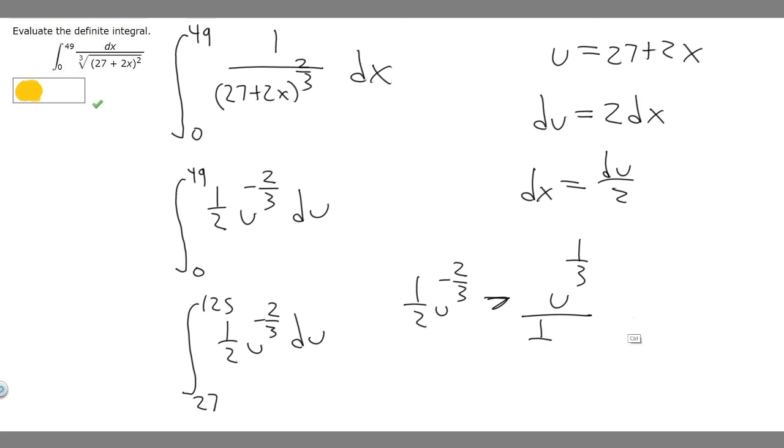So 1/2 divided by 1/3, we can write as 1/2 times 3/1, which just becomes 3/2. So we just have 3/2 times u to the 1/3. Since we're doing the definite integral, we can ignore the plus C. So it's just 3/2 times u raised to the 1/3.